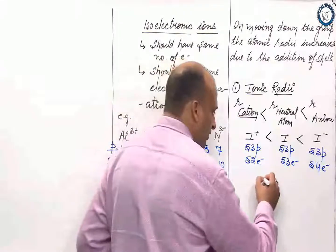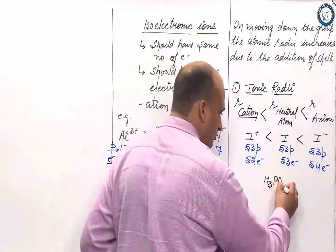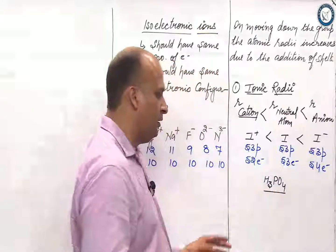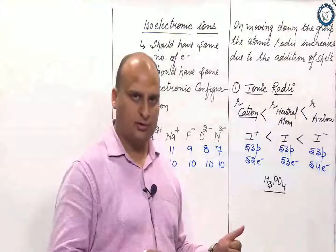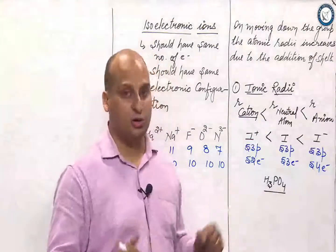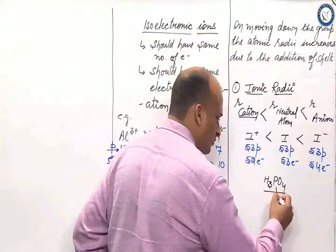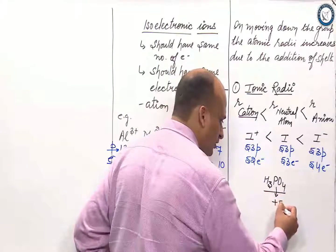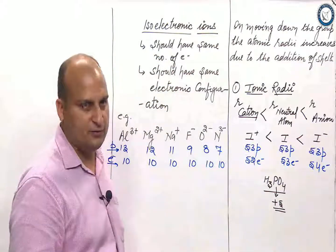Suppose I am given H3PO4, and they ask me what is the electronic configuration of phosphorus in H3PO4. So, how do I solve it? In H3PO4, phosphorus has got plus 5 oxidation state.